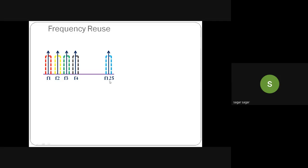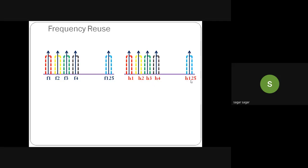For two-way communication we require full duplex, meaning at least two channels must be allocated — one uplink and one downlink. So we have 125 duplex pairs available, which are used for full duplex communication.